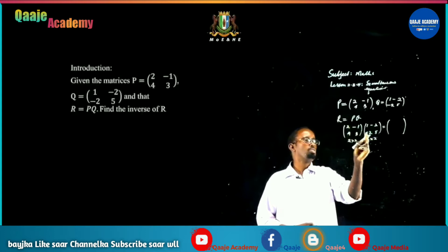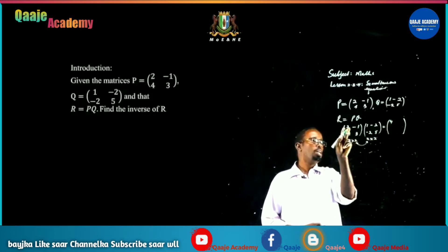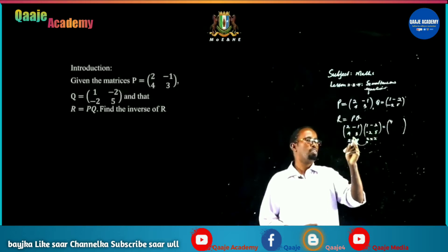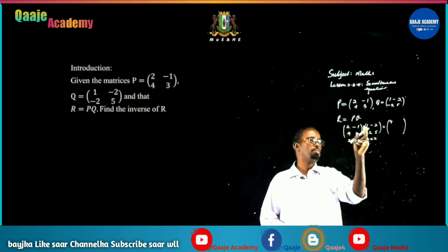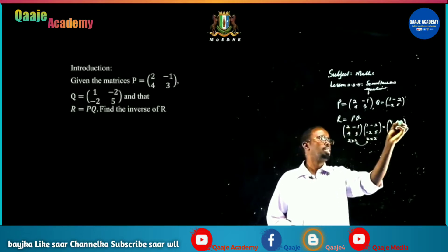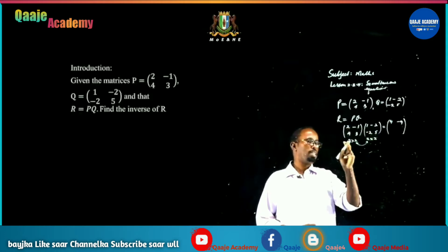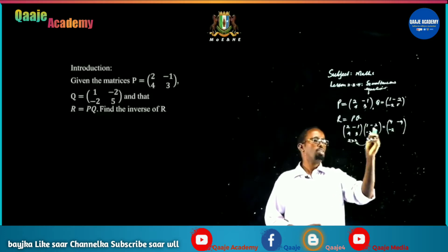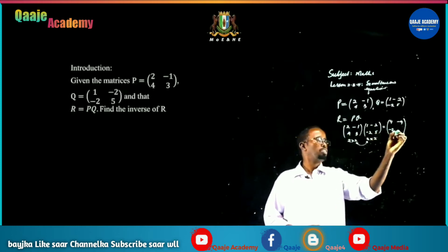Multiplying gives: 2 plus 2 equals 4. Then minus 4 minus 5 equals minus 9. Then plus 4 minus 6 equals minus 2. And minus 8 plus 15 equals positive 7. So R equals [4, -9; -2, 7].